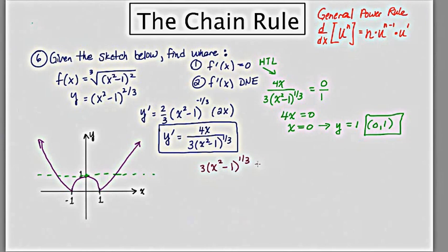So I'm going to take the denominator and I'm going to say, well, where does this equal 0? Dividing by 3, I get x squared minus 1 to the 1 third is equal to 0. Then I will take, I will raise both sides,